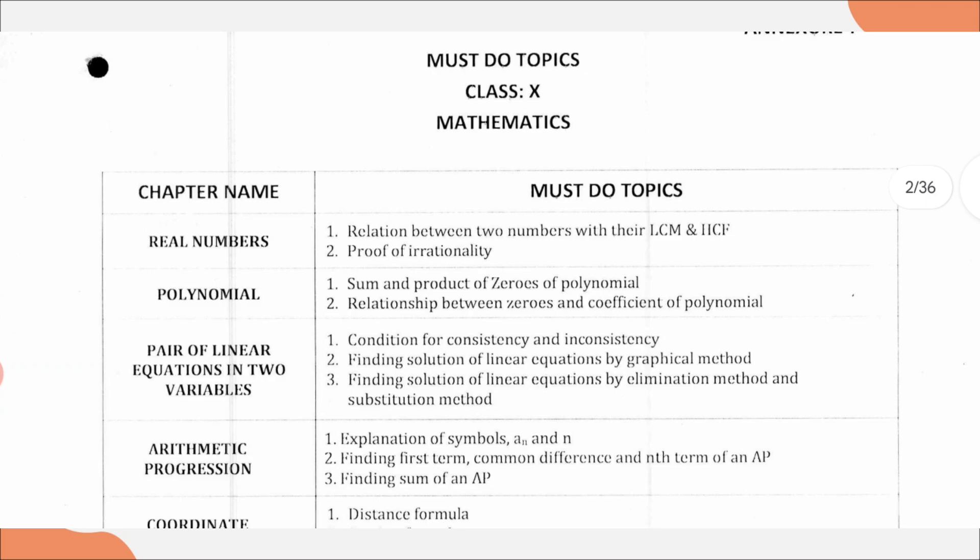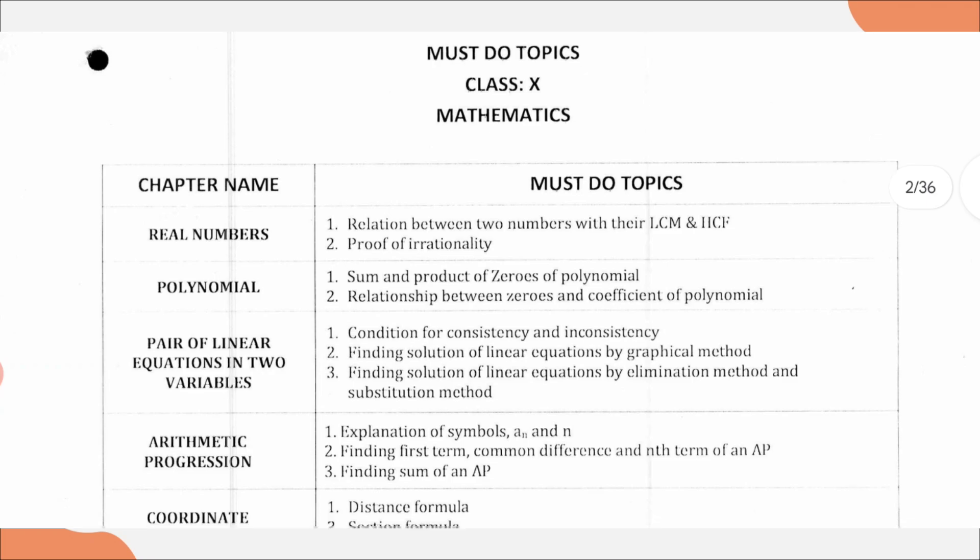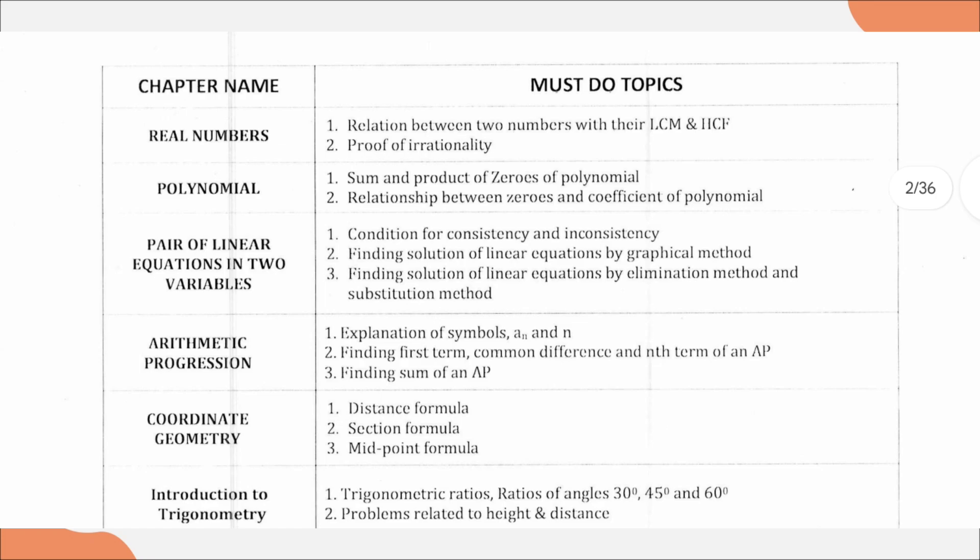From the first chapter, Real Numbers, we have two topics: relation between two numbers with their LCM and HCF, and proof of irrationality. From Polynomial chapter, you have sum and product of zeros of polynomial, and relationship between zeros and coefficient of polynomial.